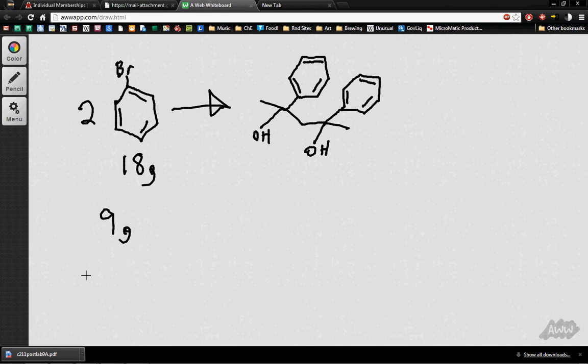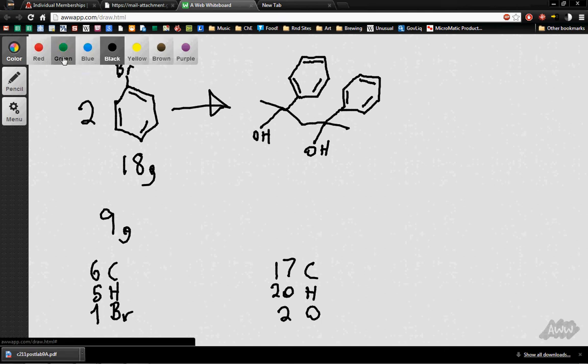And I added up, you might want to double check this, but I found that we have six carbons and we have five hydrogens, and we have one bromine. And on this other guy, I found that we had 17 carbons, 20 hydrogens, and two oxygens.